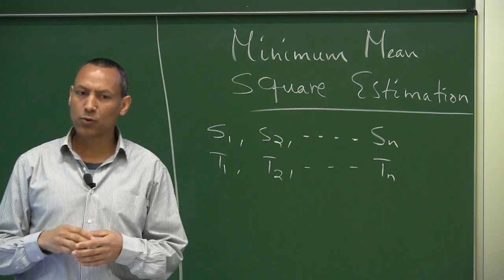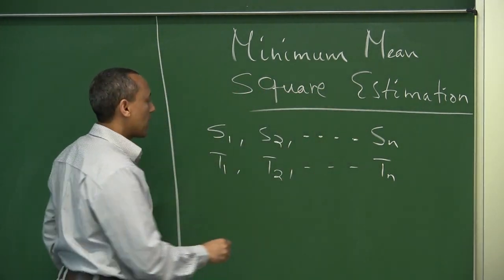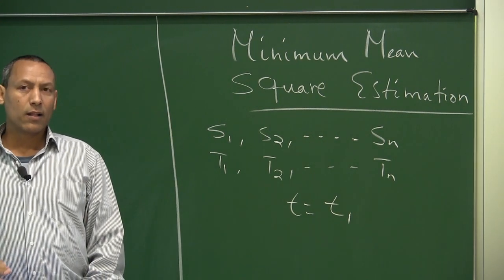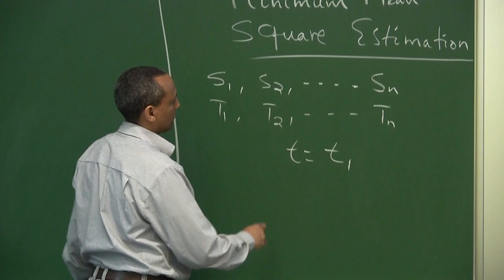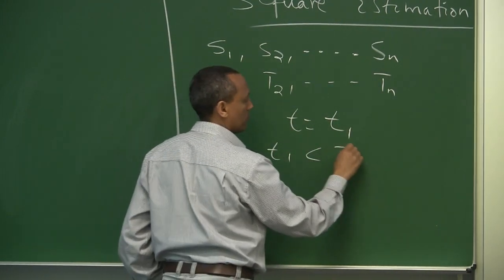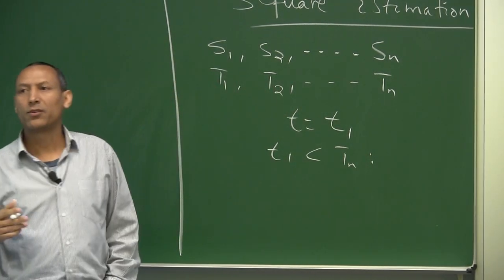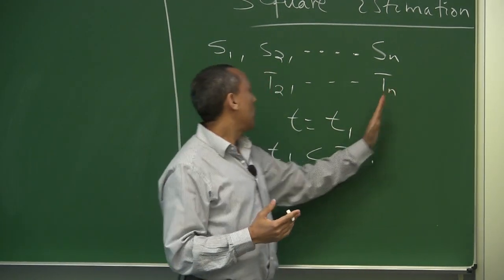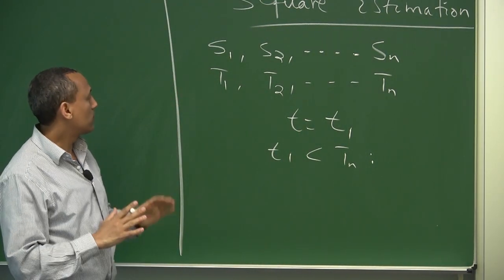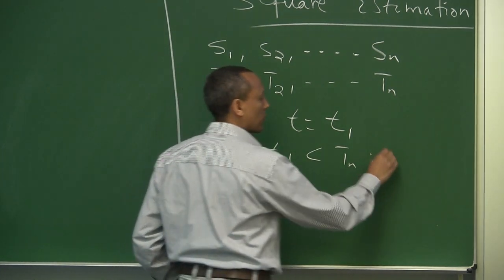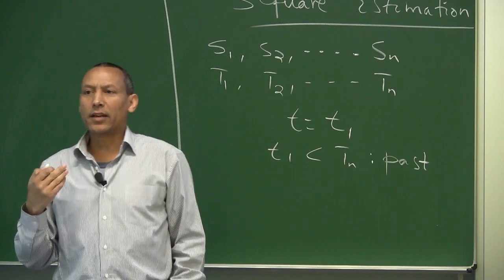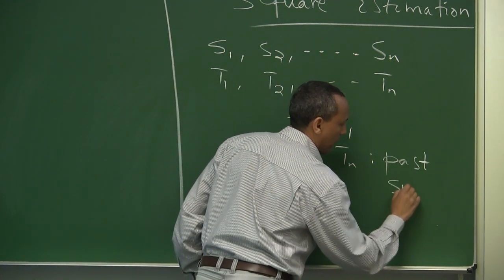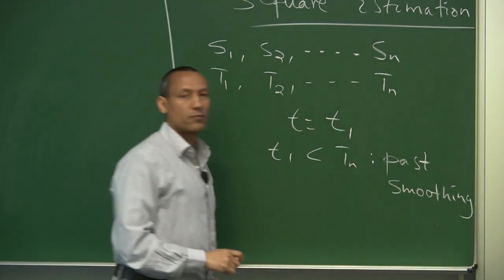Suppose our interest is to reason about this sample at time t equal to t1. If t1 is less than tn, this means we are interested in the past. Suppose this is where we are. If we are interested to reason about the time which is below tn, this is of course the past. The problem we are dealing with is smoothing.